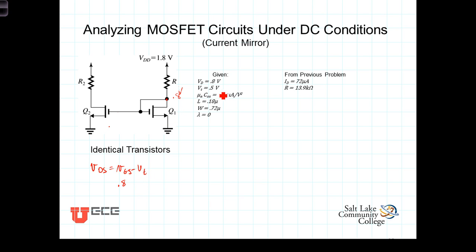And we know that V sub T is 0.5 volts. So that tells us then that the voltage on this transistor at the drain is going to be 0.3 volts.